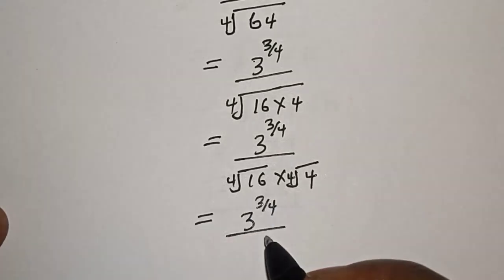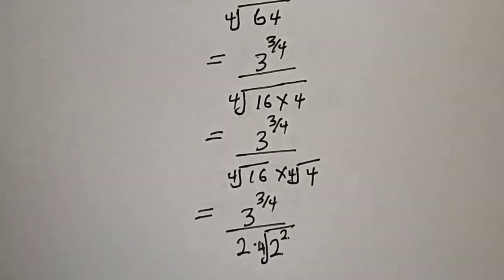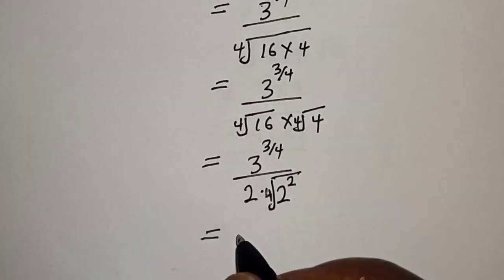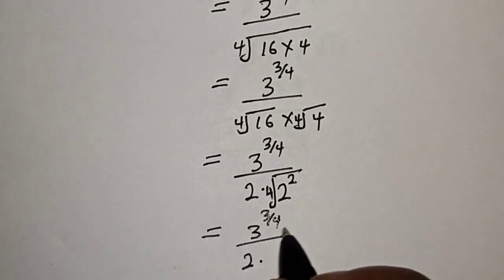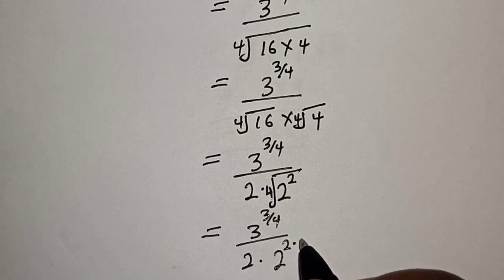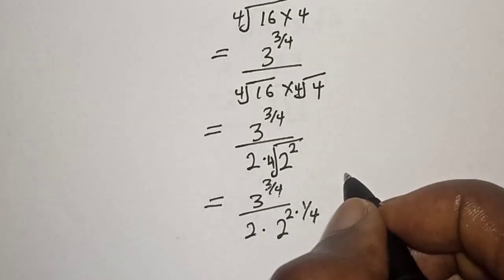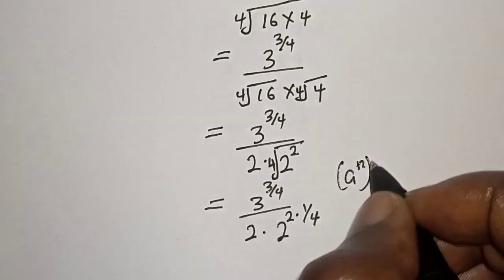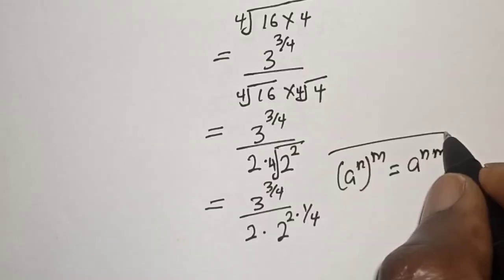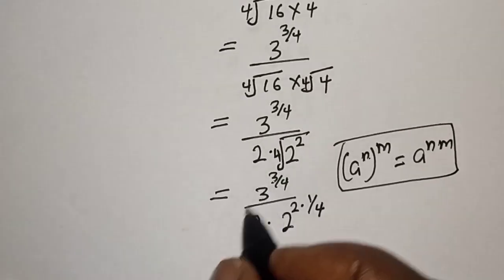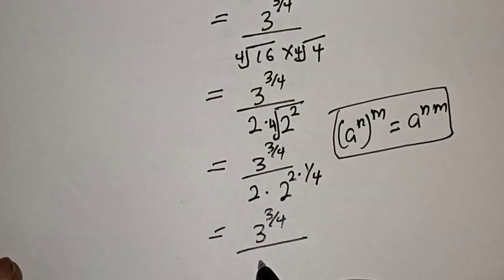Then this is equal to 3 raised to power 3 over 4, over the 4th root of 16 — which is 2 — multiplied by the 4th root of 2 raised to power 2. This equals 3 raised to power 3 over 4, over 2 multiplied by 2 raised to power 2 times 1 over 4. Take note of the rule that a raised to power n, then to power m, is equal to a raised to power n times m.